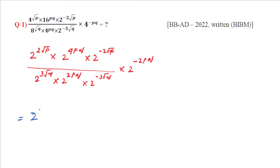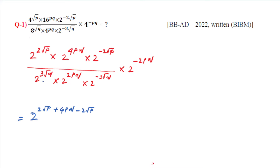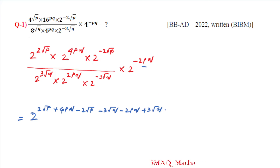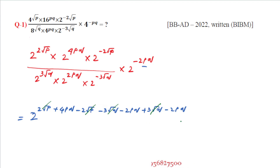Combining exponents in the numerator and denominator: 2 root p minus 2 root p cancels; 3 root q and negative 3 root q cancel with positive root q; 4 plus 4pq minus 4pq cancels. Everything reduces to 2 to the power 0, which equals 1. So the answer to question 1 is 1.